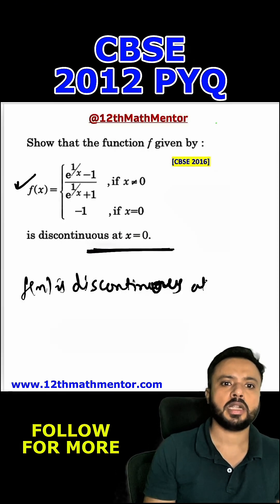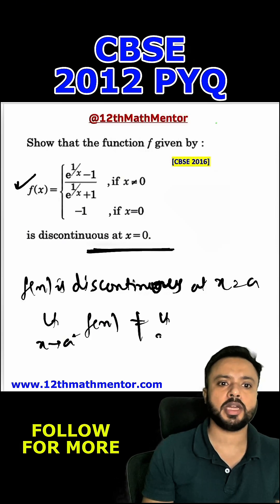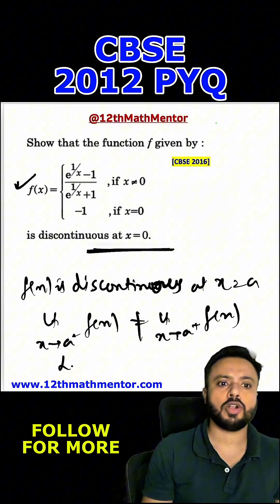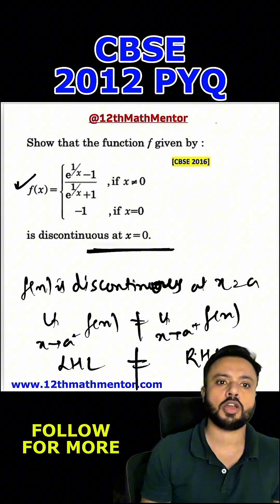f(x) is discontinuous at x equal to a when limit x tends to a minus f(x) is not equal to limit x tends to a plus f(x). This is also called LHL and this is also called RHL. Basically we have to show that LHL and RHL are not equal at x equal to 0 for this given function.